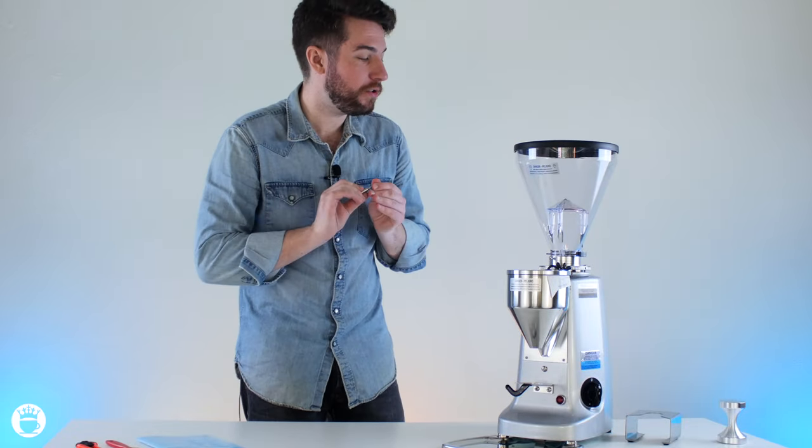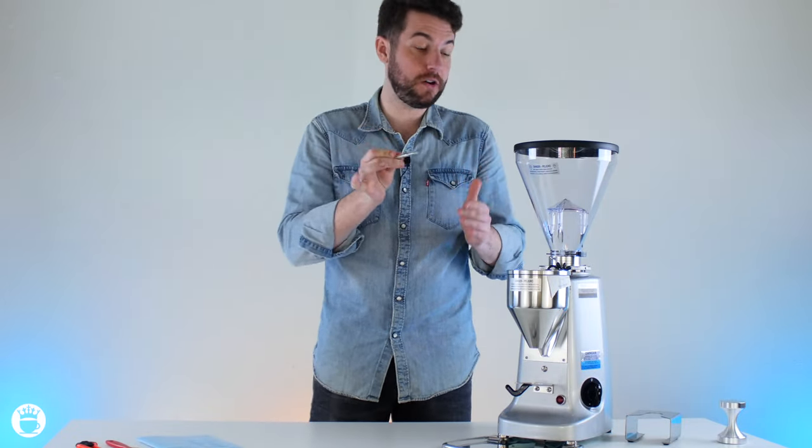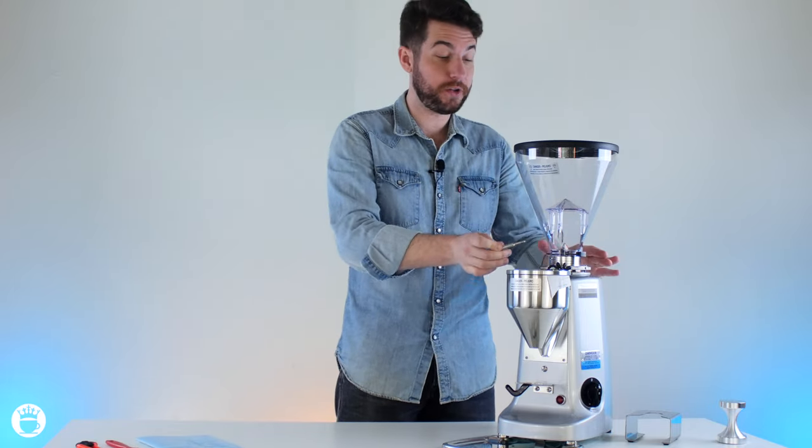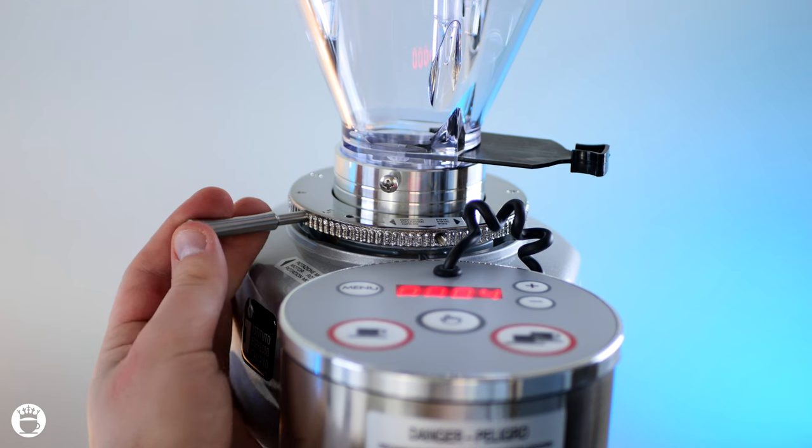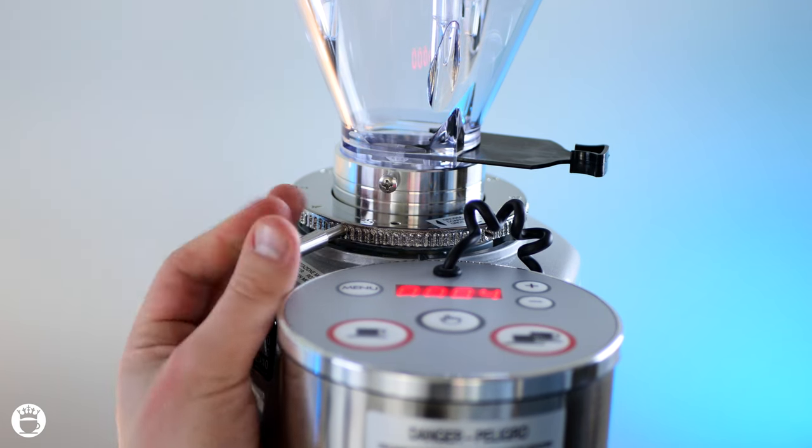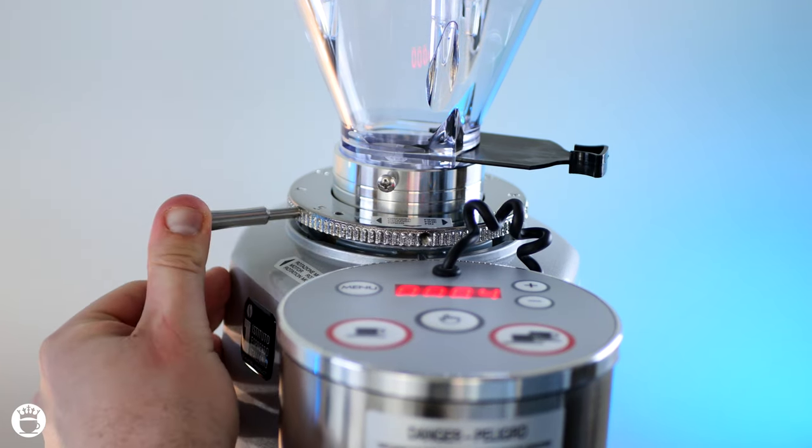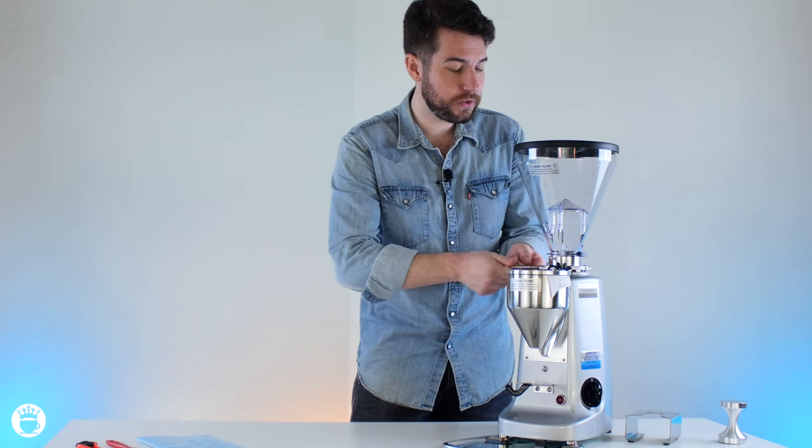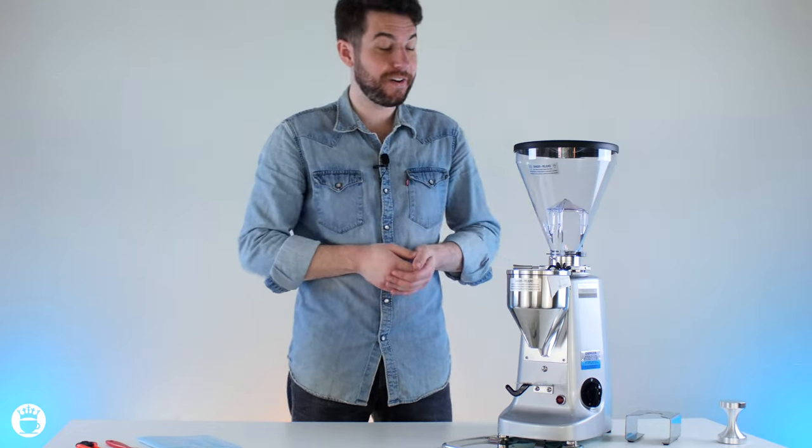All right, so here we are all set up here. The last thing is to take this other metal piece and decide where you'd like to place it on your stepless micrometric adjustment dial. And that kind of allows you to move it around easier while you're grinding espresso trying to make your grind finer or coarser. So just attaching this little handle here, screw it in place, and now you can rotate that around much easier.